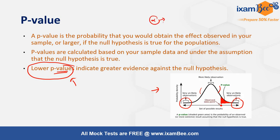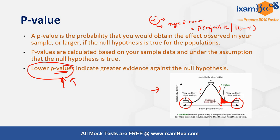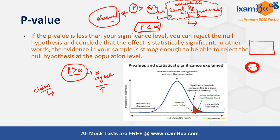Alpha represents the percentage of error the experimenter will allow. Alpha is also called the Type 1 error, which is the probability of rejecting the null hypothesis even when the null was actually true. This kind of error is called Type 1 error, also called the alpha level of significance — the acceptable level — whereas the p-value is the observed level of significance in the collected sample.